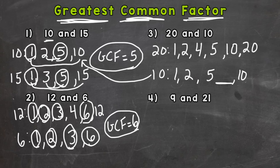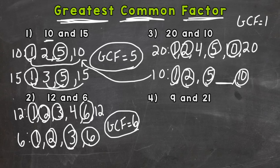So I see that 1, 2, they have 5 in common, and then they have 10 in common. So the GCF is 10 for 20 and 10.